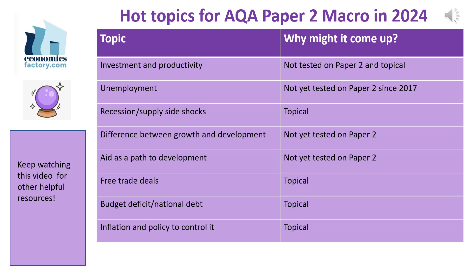Investment and productivity looks a likely area. The UK has an investment problem, investing a relatively low percentage of GDP compared to other G7 nations. That's accompanied by a productivity problem, which is a significant constraint on economic capacity. It hasn't really been tested yet and it is topical too — a winning combination in terms of something that might come up on the paper.